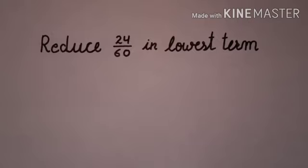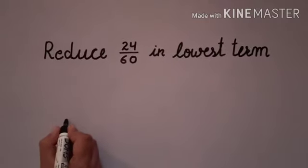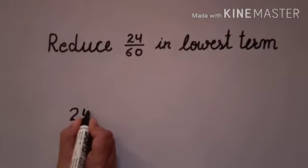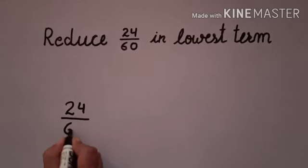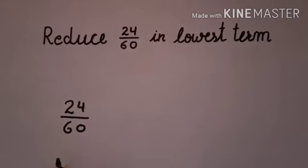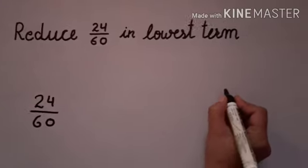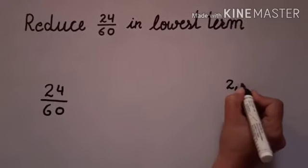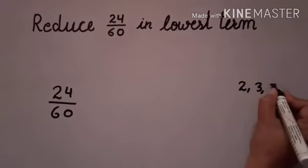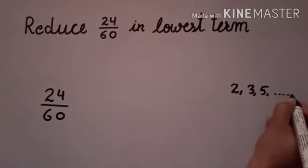The question is: reduce 24 upon 60 to lowest terms. We have to use prime numbers like 2, 3, 5 for the division.